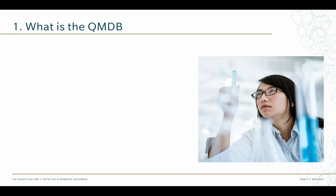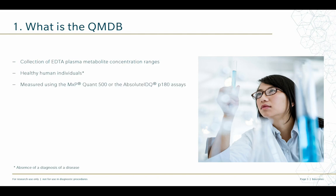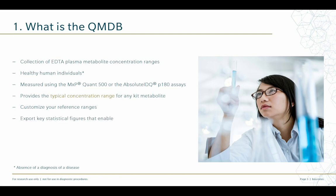The Quantitative Metabolomics Database provides plasma concentration ranges for metabolites covered by Biocrates profiling kits. The QMDB is a collection of metabolite concentration ranges from healthy human individuals whose EDTA plasma samples were measured using the MXP Quant500 or the Absolute IDQ P180 assays. You can view the typical concentration range for any kit metabolite. Concentrations of individual samples are not provided. You can customize your reference ranges with a specified subset of the healthy population, and you can export key statistical figures that enable drawing box plots and displaying concentration distributions, or performing comparative statistics and discovering significant concentration differences.